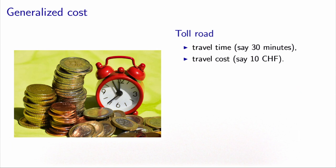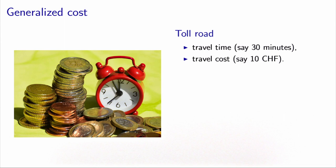We introduce the concept of generalized cost, which translates all components into the same unit. To do that, we need to translate minutes into francs. This is called by economists the value of time — the amount of money people would be willing to pay to save travel time. A typical value is 30 francs per hour, or equivalently 0.5 francs per minute.